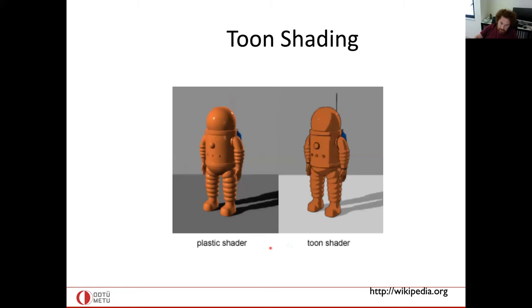The other programmable unit is the fragment shader. Here the rasterizer feeds in the pixels of each primitive like a triangle, and each pixel computes its color. This is about transformation at vertex level and coloring at pixel level. Here is the cartoon shader — let's implement it.